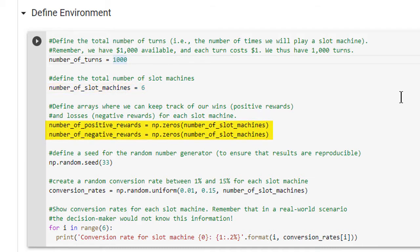We next define arrays where we can keep track of our wins and losses for each slot machine. As noted in the previous lesson, the number of past wins and losses for each slot machine will be used as shape parameters for the beta distribution. Next, we define a seed for the random number generator. This is only being done to ensure that our results are reproducible if we were to run the notebook multiple times.